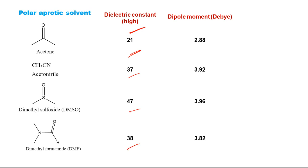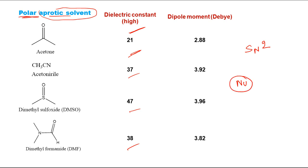High dielectric constant polar aprotic solvents are ideal when you need a polar solvent without any active hydrogen. They can dissolve ions while keeping them free, because being aprotic means no hydrogen bonding with the reagent. SN2 reactions are a very good example — the nucleophile must be free, requiring aprotic conditions, but also carries charge requiring high polarity. Both requirements are fulfilled by these high dielectric constant polar aprotic solvents.